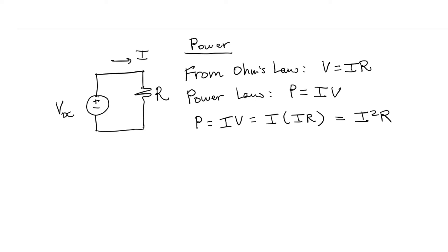We can also make a substitution for I. We know that current is V over R in a resistor. Therefore, the power consumed in a resistor is V squared over R. In both cases, the power supplied by the voltage source is equal to the power consumed by the resistor.